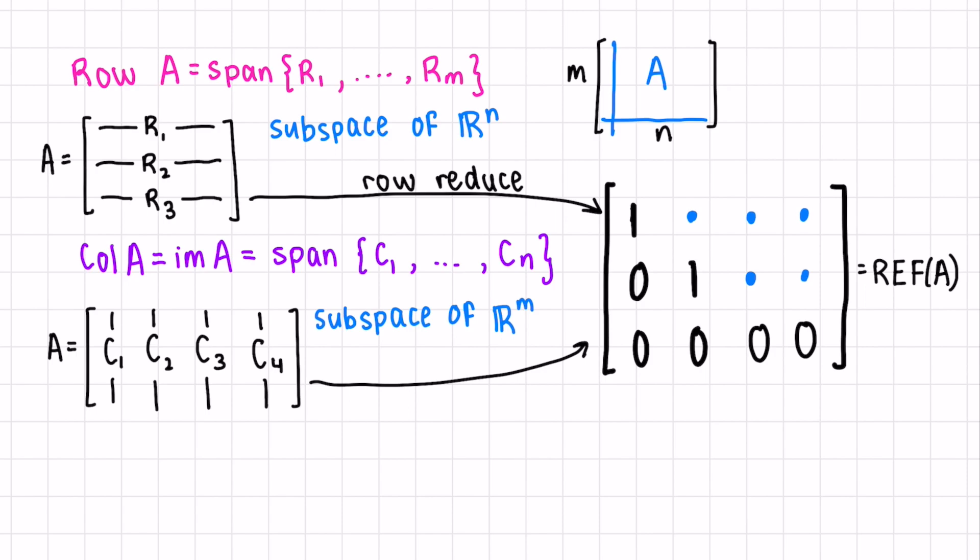But the opposite is not true, row operations generally change the column space. Since we've now row reduced to get this matrix in row echelon form, we can see we have two leading ones. The last row is all zeros, so we don't need that. That doesn't add anything to the span of our row space. So the basis of our row space would be row 1 and 2.